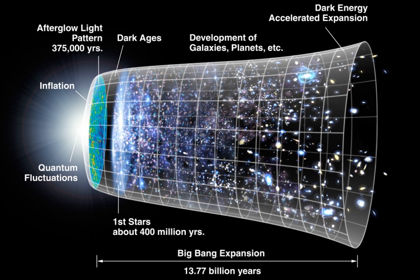The first subatomic particles to be formed included protons, neutrons, and electrons. Though simple atomic nuclei formed within the first three minutes after the Big Bang, thousands of years passed before the first electrically neutral atoms formed. The majority of atoms produced by the Big Bang were hydrogen, along with helium and traces of lithium. Giant clouds of these primordial elements later coalesced through gravity to form stars and galaxies, and the heavier elements were synthesized either within stars or during supernovae.